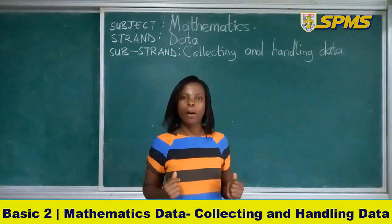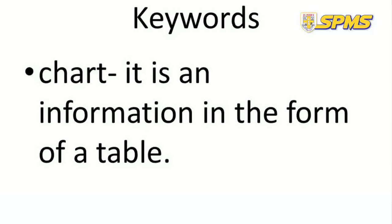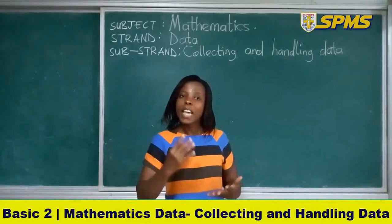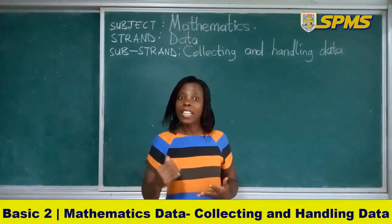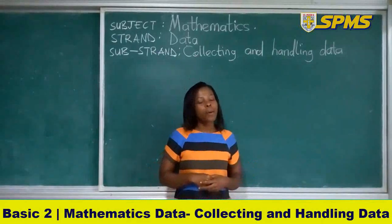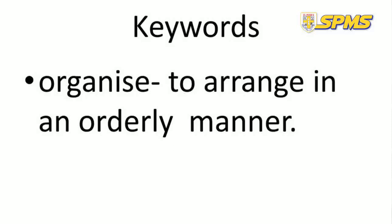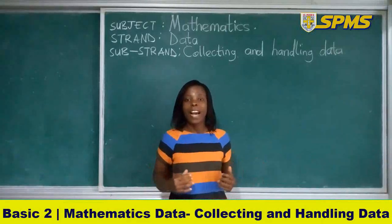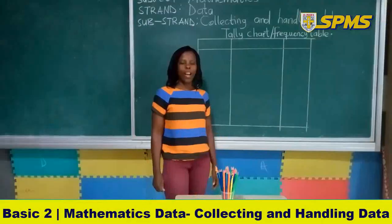Which other word did we talk about? Charts. We said it is information in the form of a table, so we were able to represent our information on a table, which is known as the tally chart. We also looked at the word organized — when we talk about organization, you are going to arrange your data in an orderly manner.